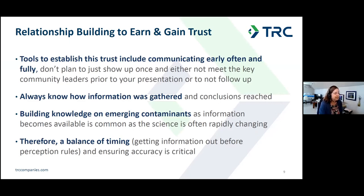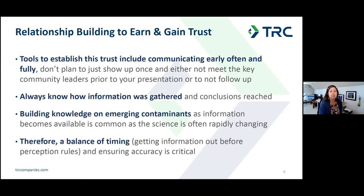Other tools for gaining trust include communicating early and often. Don't plan to just show up once without meeting key community leaders prior to your presentation or without following up. Always know how information was gathered and how conclusions were reached. Build knowledge on emerging contaminants as information becomes available, since the science is often rapidly changing — be honest about that, and tell them you'll come back with new information. There's a balance of timing: getting information out before perception rules, while ensuring accuracy is really critical.